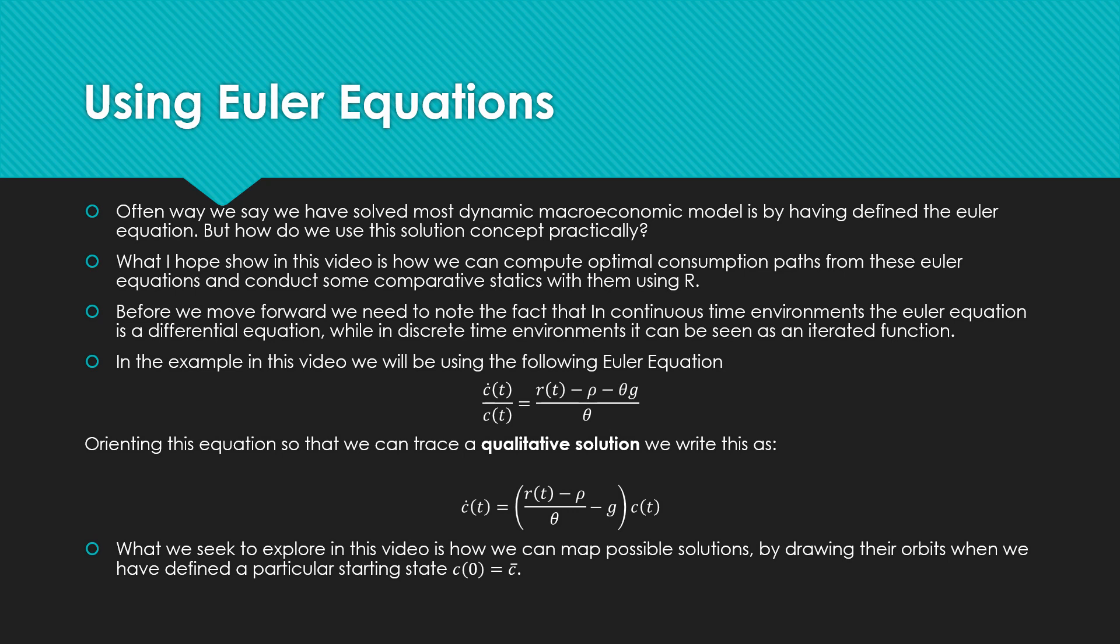And the example which we'll be using will be considering the following Euler equation. This is from the Ramsey-Cass-Koopmans model video series. And if we reorient this equation, we're going to have it as follows so we can draw qualitative solutions.